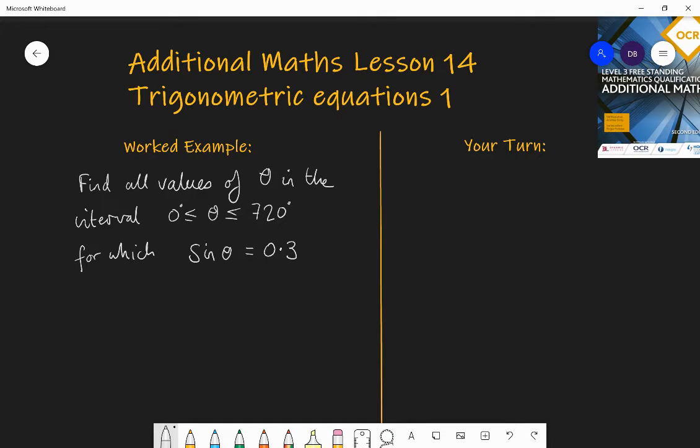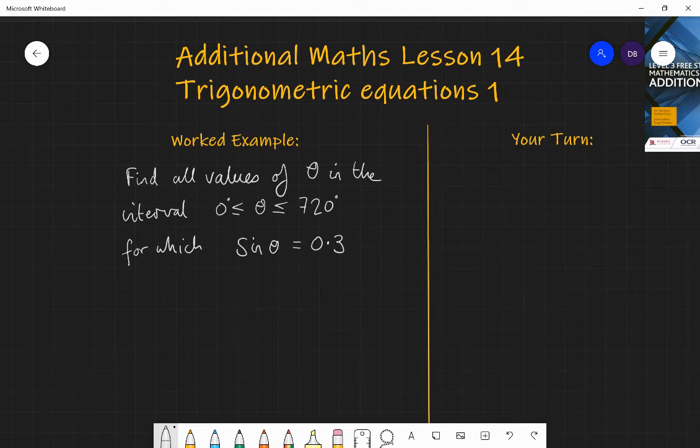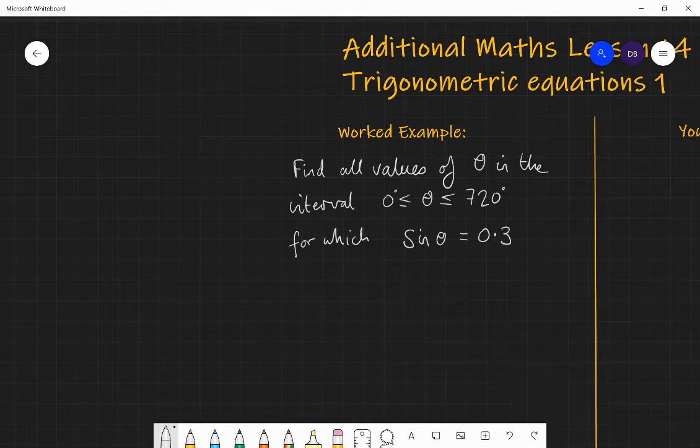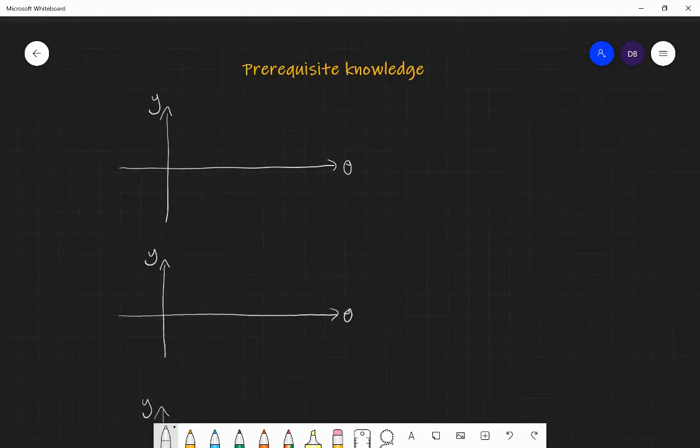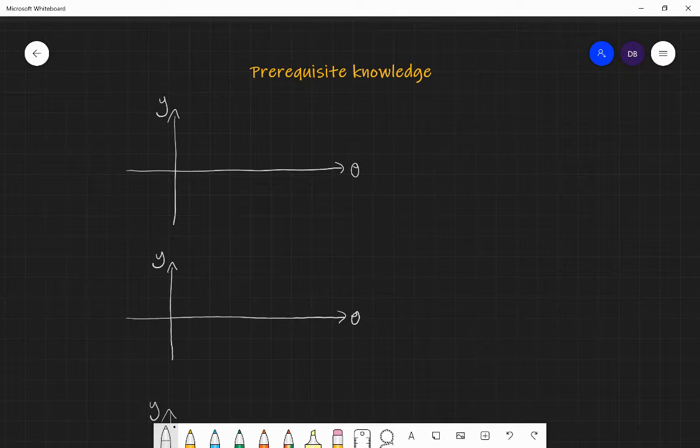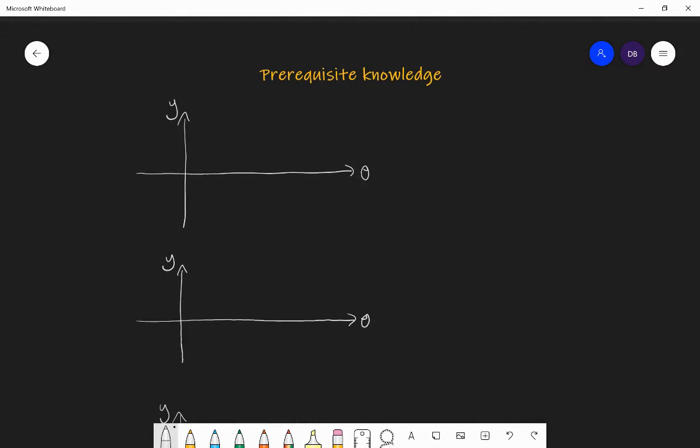Now the prerequisite knowledge we need for this is understanding the sine, cosine and tangent ratios. So for this specific lesson, we're going to need you to know the graphs of y equals sine x, y equals cos x, y equals tan x. I'm just going to quickly run through each of those. You should have seen these before, but if you haven't, here's what they are.